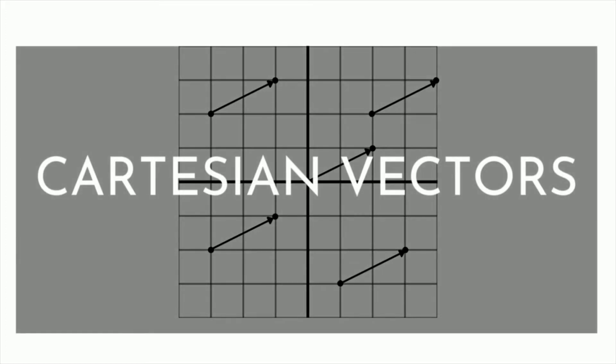So imagine we have a pile of vectors that look like this. Each of these has the same magnitude and we can write the endpoints of each of them. These are all Cartesian vectors. They're vectors that are defined using coordinates on a Cartesian plane.